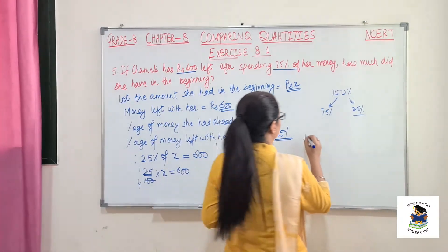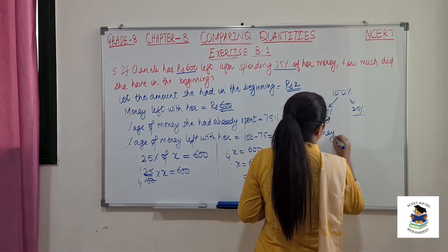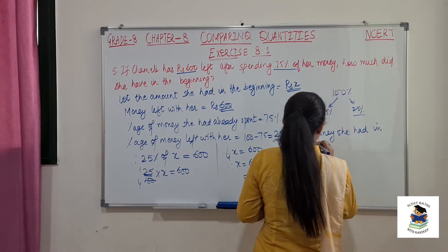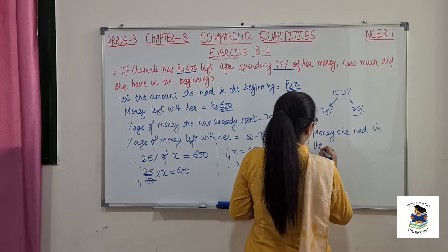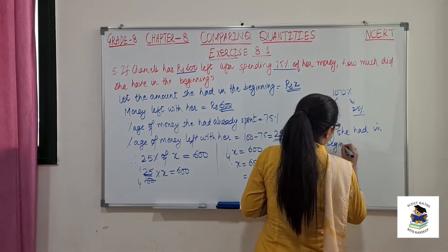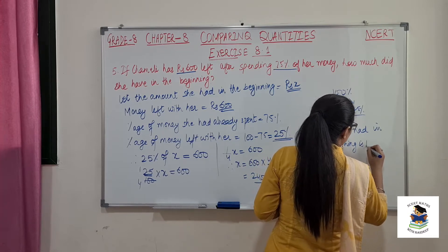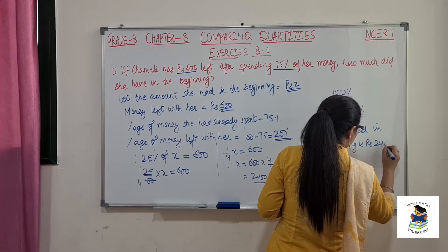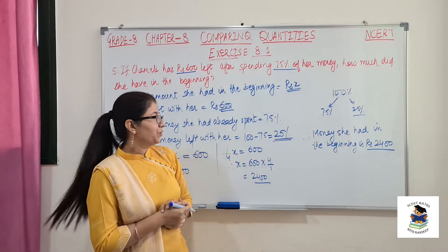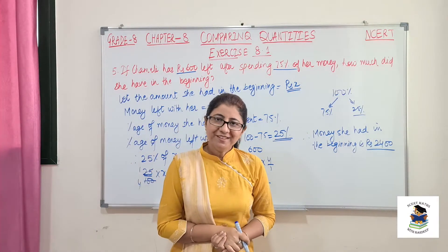Therefore, the money she had in the beginning is rupees 2400. That is our question number 5. Now let's see question number 6.